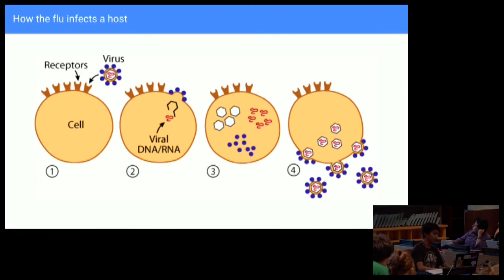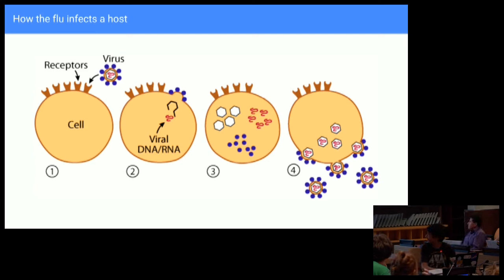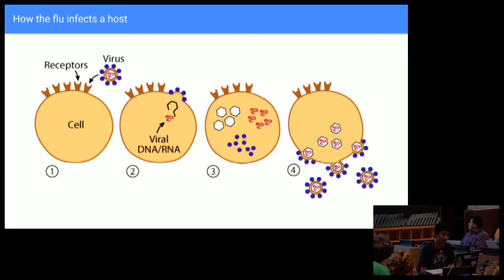Here is a nice graphic of how the flu infects a host. In that first panel, you've got the virus, which is the smaller circle, and the cell. Those little purple dots on the outside of the virus are proteins, and they attach to the receptors on the host cell. After the virus gets into the cell, it dies and injects its viral DNA, RNA, and other genetic material. As the cell grows, so do the DNA, RNA, and those proteins. Eventually, when the cell is about to die, all those viruses leave the cell and go on to infect other cells.